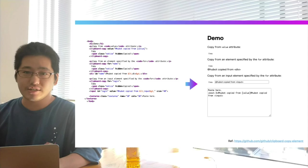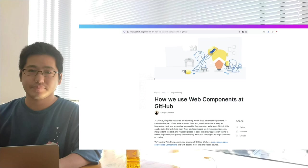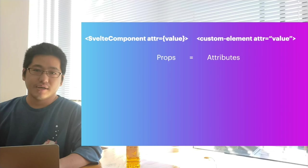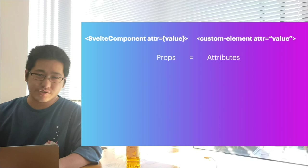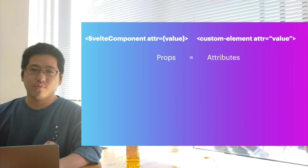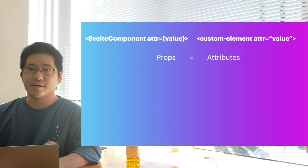Web components are technically called custom elements. Custom elements can provide functionalities roughly corresponding to components in Svelte. Let's take a look at how they can be in place of Svelte's components. Attributes, as you know in HTML, can be used as props. When we build Svelte components into custom elements, props will be translated to attributes.